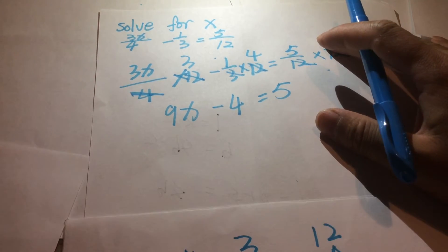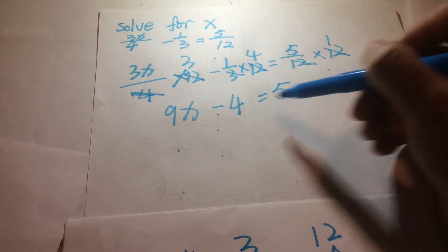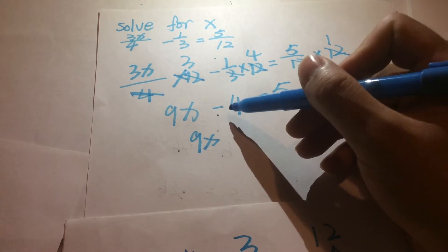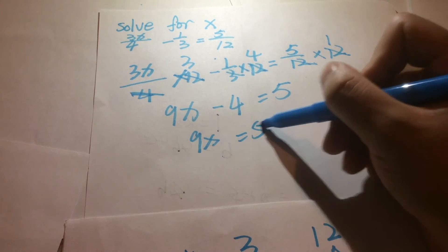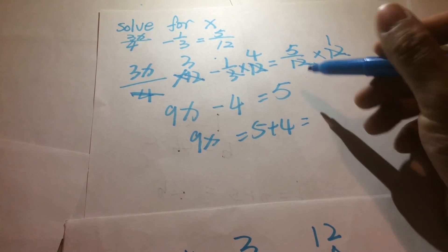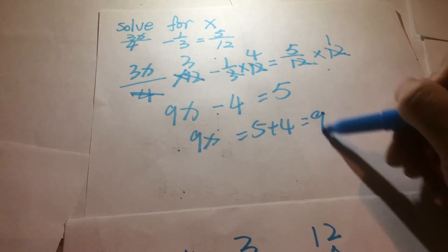We add positive 4 to both sides, it's going to be 9x. Negative 4 plus positive 4, that's going to be 0 equals 5 plus positive 4, that's going to be 5 plus 4. Of course, it's going to be 9.